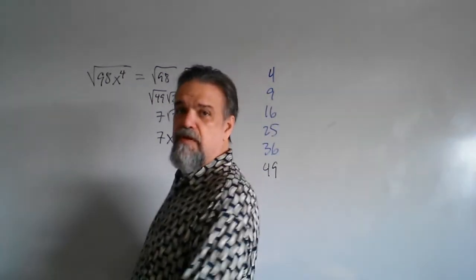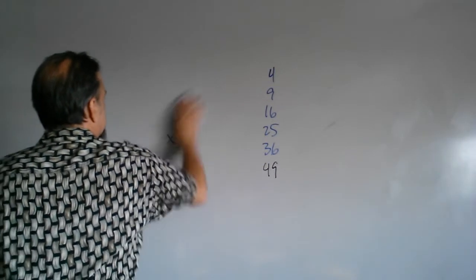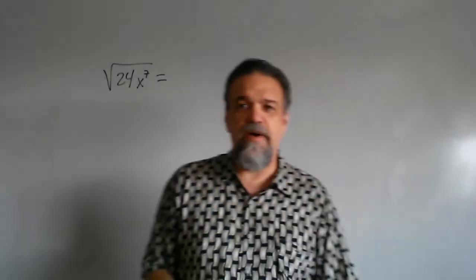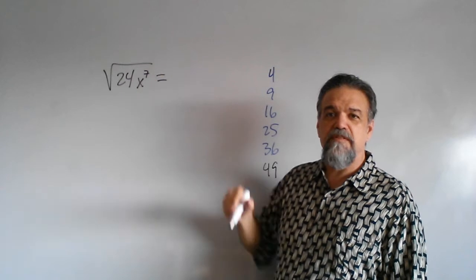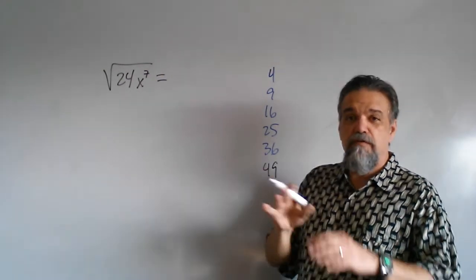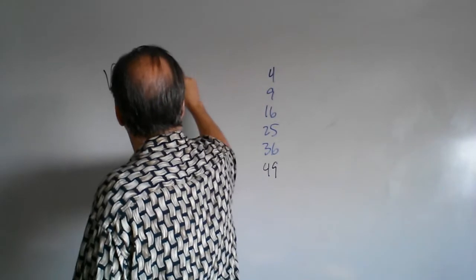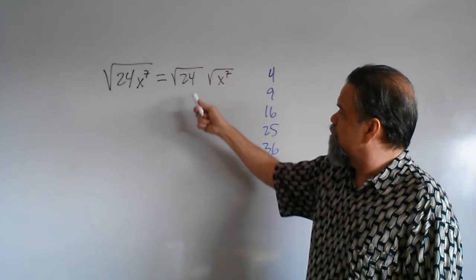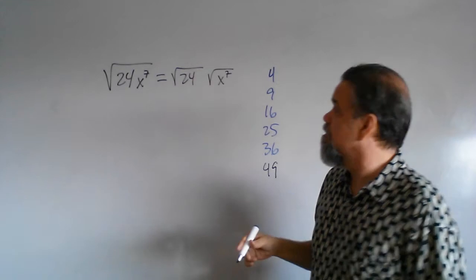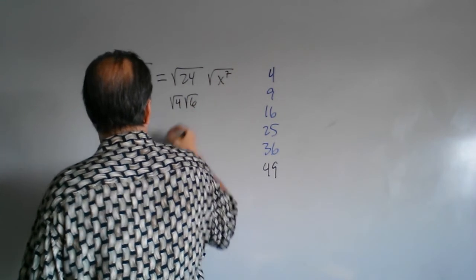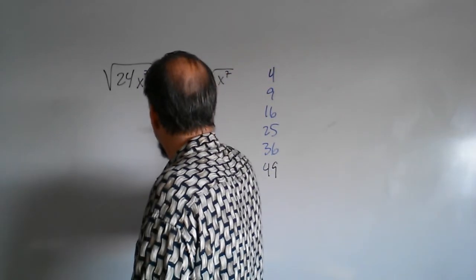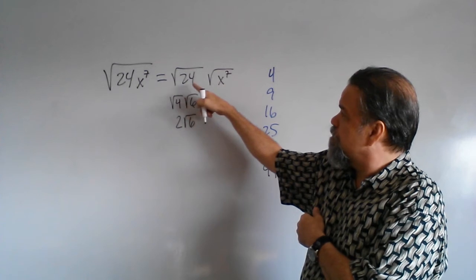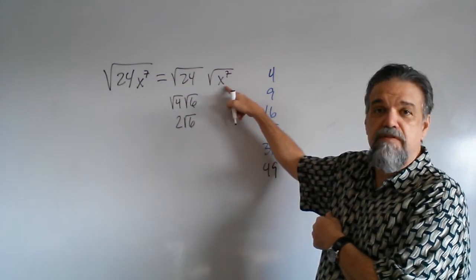One more example — let's simplify the square root of 24x to the seventh. This time my exponent inside is not even. So first let's separate our numbers and variables: the square root of 24 times the square root of x to the seventh. For 24, is there a perfect square that goes in there? Yes — 4 does. So this is the square root of 4 times the square root of 6, which simplifies to 2 times the square root of 6. Now on the variable side, I'm looking for a perfect square factor.